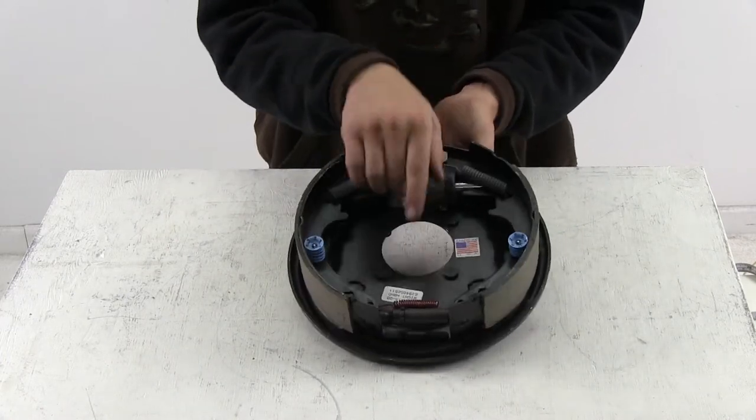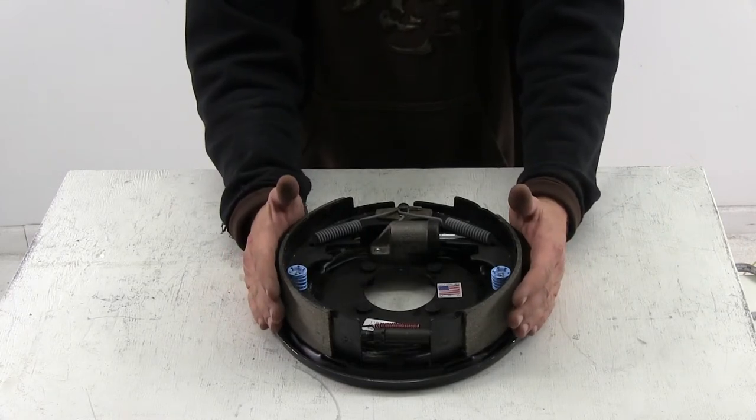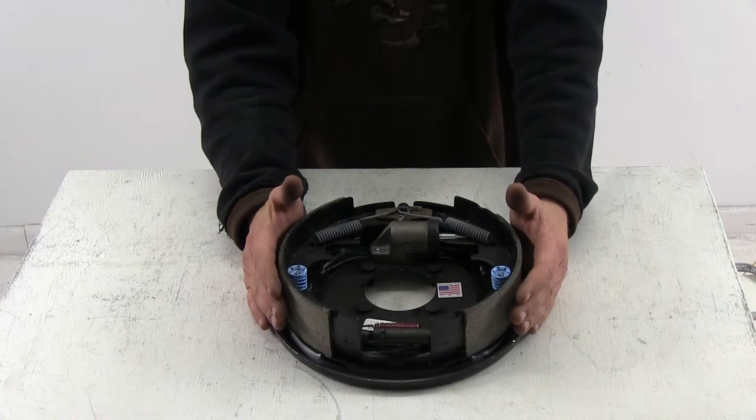On your initial installation you'll need to use the star wheel adjuster to push the brake linings out to meet your hub drum assembly braking surface. You'll want to create a light drag on the initial setup.